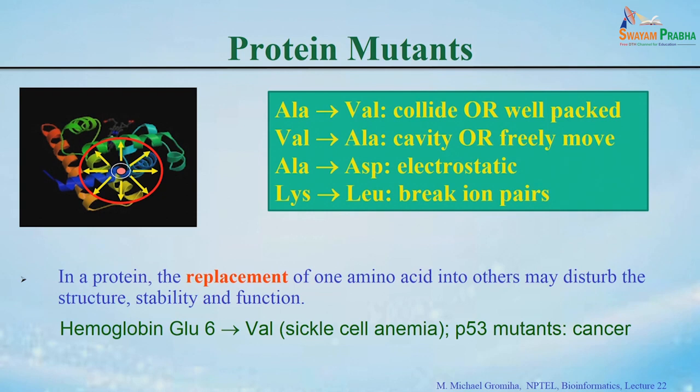For example, in hemoglobin, if you mutate glutamic acid 6 to valine it causes sickle cell anemia. Similarly, p53 is a DNA binding protein — if you make a specific point mutation, it will lose the binding affinity and may lead to certain types of cancers.